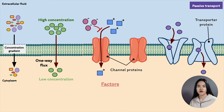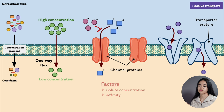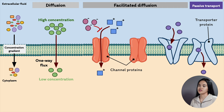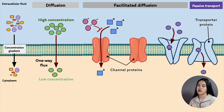The factors that influence flux through a mediated transport system include: the solute concentration, the quantity of transporters in the membrane, the affinity of the transporters for the solute, and the rate of conformational change in the transport protein. This leads us to the second type of diffusion — facilitated diffusion. Similar to simple diffusion, substances move from an area of higher concentration to an area of lower concentration and it doesn't require energy. The difference is that facilitated diffusion uses a transporter to move materials down their concentration gradient.